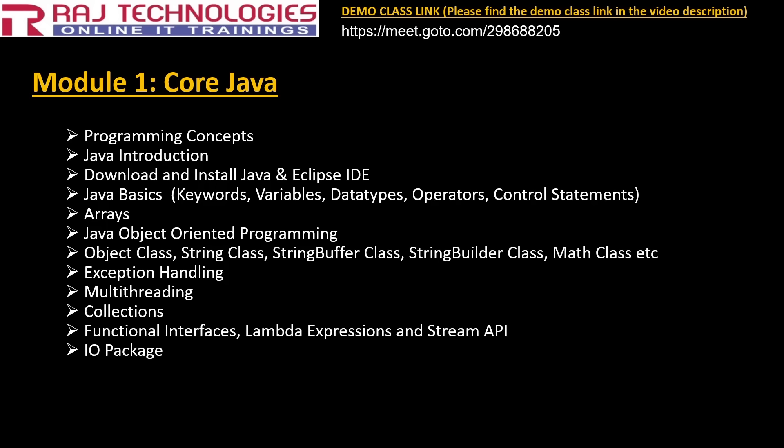We will also discuss some predefined classes like Object class, String class, StringBuffer class, StringBuilder class, Math class, how to generate random numbers, and how to generate OTPs. And one more — exception handling, multi-threading, collections, and we will discuss the important features added in Java 8 like functional interfaces, lambda expressions, and Stream API. Finally we go with the IO package — IO means input-output package.